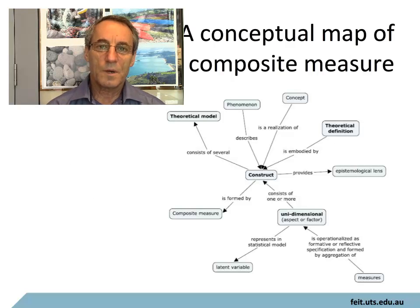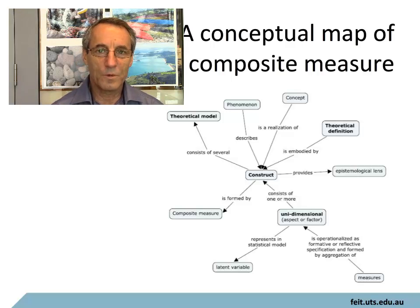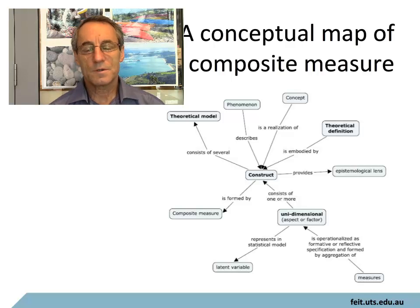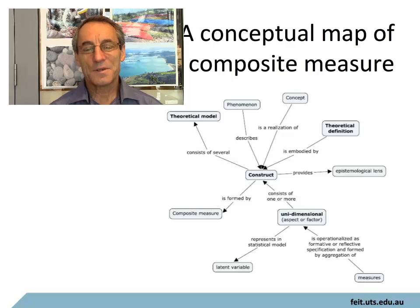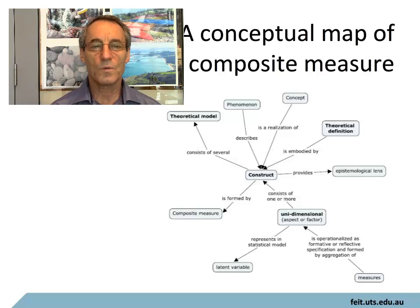Here is a conceptual map of a composite measure. The whole idea was to put together this conceptual map because we were writing an international standard at the time, and there was considerable debate about the terminology used. Putting together a conceptual map enabled everybody to agree on what we should name the various concepts and how they're related to each other.